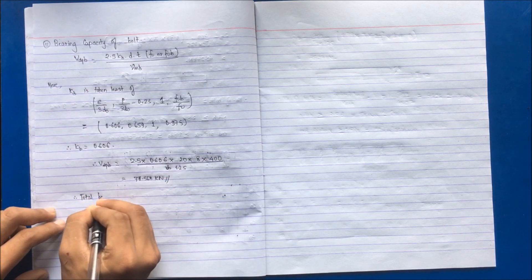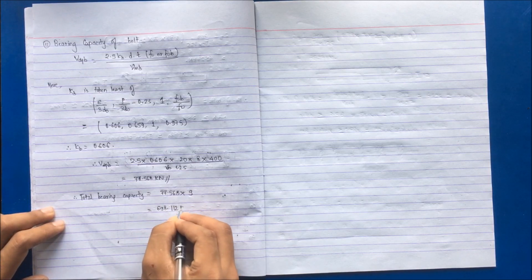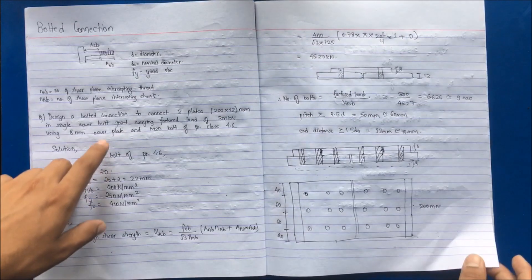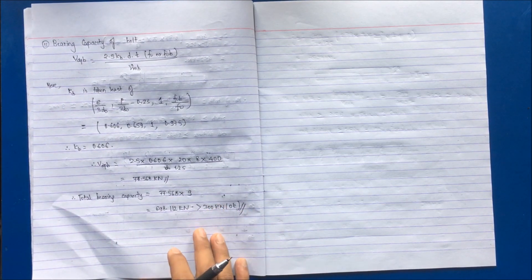This is the bearing capacity for a single bolt. The total bearing capacity is: Vdpb × number of bolts = 77.568 × 9 = 698.112 kN. This should be greater than 300 kN — the given factored load — and it is, so the design is adequate.